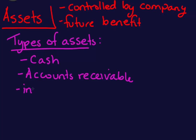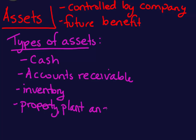Another type of asset is inventory. We can sell inventory to our customers in order to gain cash to then buy things, so these all come back to generating cash. The last big category of assets would be property, plant and equipment, or fixed assets. If you own a building or a piece of equipment, you can use that to run your operations and generate cash.